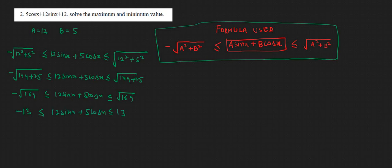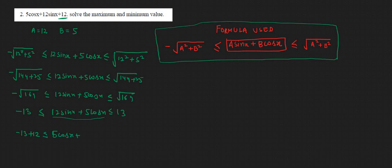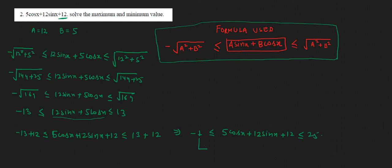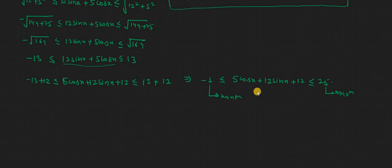Now, this is not the complete question — we also have the extra term plus 12. We add 12 to every side: minus 13 + 12 ≤ 5cos(x) + 12sin(x) + 12 ≤ 13 + 12. This gives us minus 1 ≤ 5cos(x) + 12sin(x) + 12 ≤ 25. So the minimum value is minus 1 and the maximum value is 25.